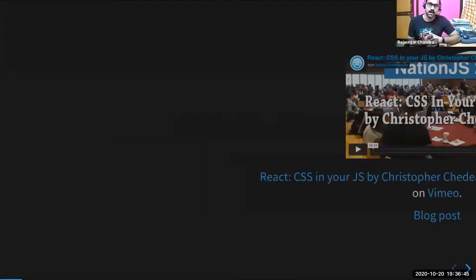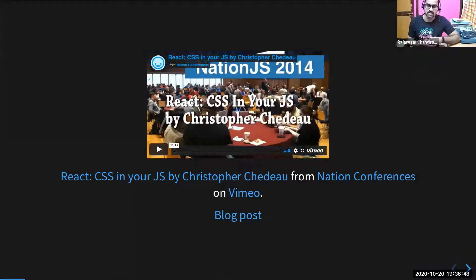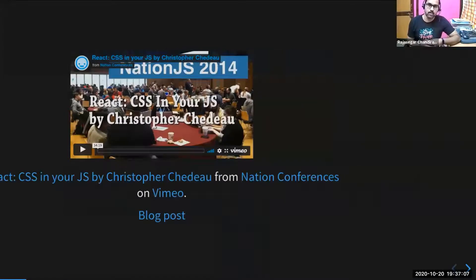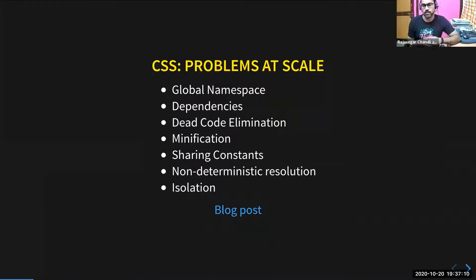As far as I can remember, it all started in November 2014, when Christopher Shadow from the Facebook front-end infrastructure team gave a very thought-provoking talk about CSS in JS. His talk highlighted the fundamental flaws in CSS and how styling in JavaScript can solve most of the problems. He talks about problems of using CSS at scale, like global namespaces, dependencies, dead code elimination, and so on. He shows a way to use CSS in JavaScript to solve these problems without bringing in any hacky solutions. It's a very good video and he has also written a blog post about it.